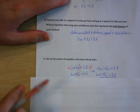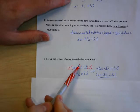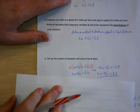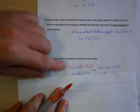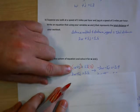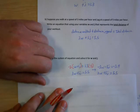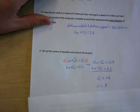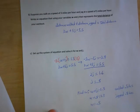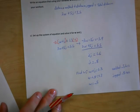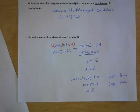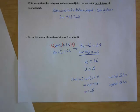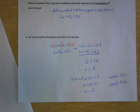Setting up the system of equations and solving it — using either elimination or substitution — the toughest part is coming up with the equations. Going through the solution: they jogged for 0.8 hours and walked for 0.5 hours. That's it for this lesson.